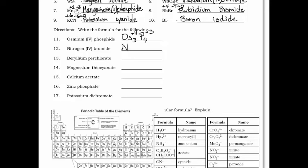Next: nitrogen is N, and it's a plus four. Bromide is Br, with a negative one oxidation number. The two numbers don't cancel out and don't have a common factor, so we swap and drop. The four comes down as a subscript on Br. The one would be on nitrogen, but we don't write ones.